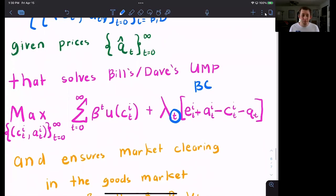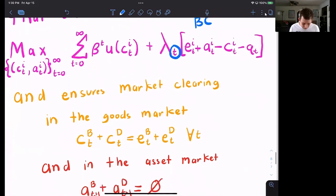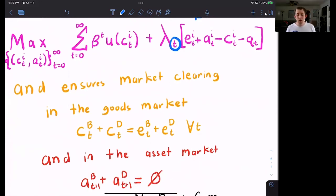And we need to ensure market clearing in the goods market, where we can only eat what we have been endowed. And in the asset market, we need the total number of assets in each period to be zero. What does this mean? This means that if I'm a borrower, I have to be able to find a lender.